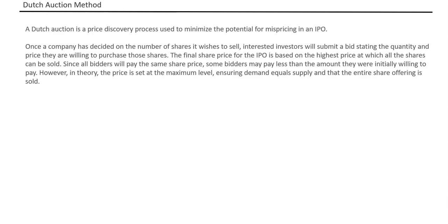Today's topic is the Dutch auction method. It is a price discovery method normally used in IPO — Initial Public Offer. When you are issuing securities for the first time, that process is called an IPO, where a company issues shares. The Dutch auction method is a price discovery process used to minimize the potential for mispricing — it is a way of finding a suitable price for the IPO.